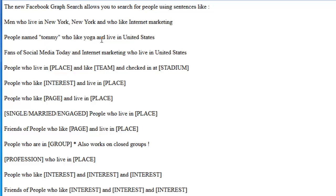Or something like people named Tommy who like yoga and live in the United States. As we take a look at these searches, you'll notice the type of structure that we have — people who live in a place and like a certain interest, or people who like an interest and live in a place.